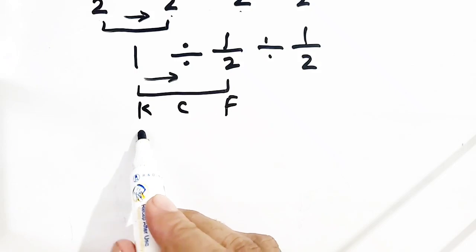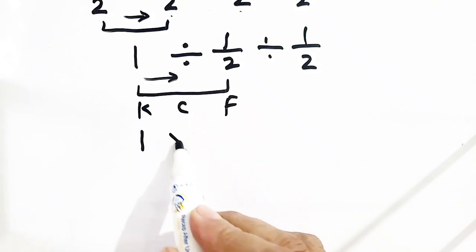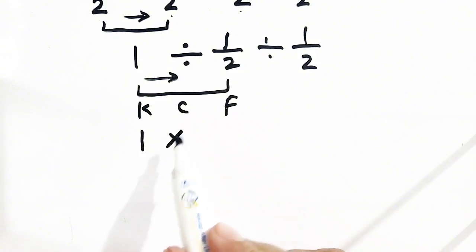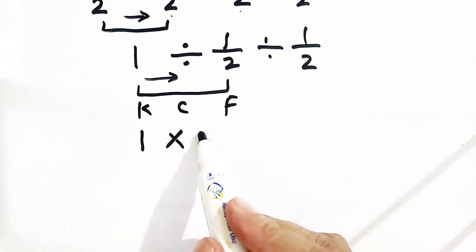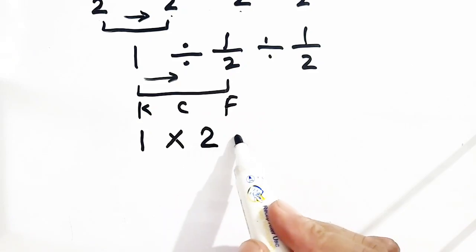Keep 1 is keep mean kept it. C mean change, so divide is change into multiplication. And 2 is 1 by 2 is flip, so it will become only 2.